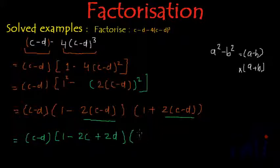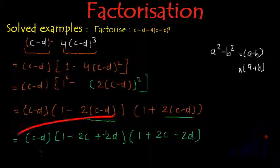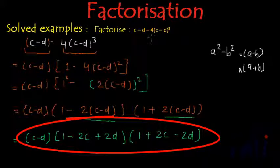and this can be written as (1 + 2c - 2d). So these three are the factors of c - d - 4(c-d)³. It had a cube, but we haven't used the formula of cube.